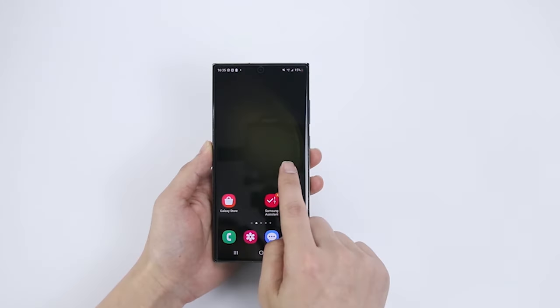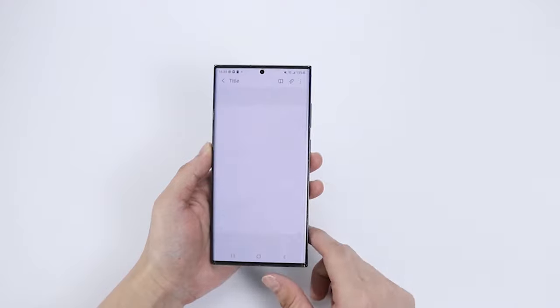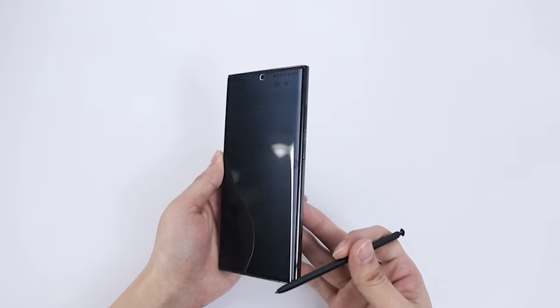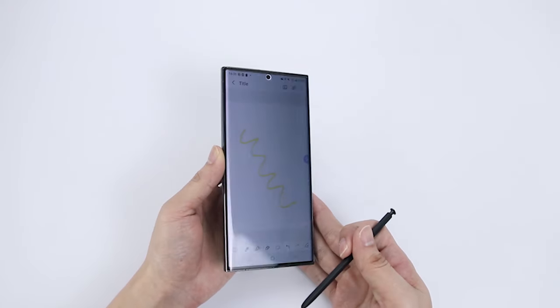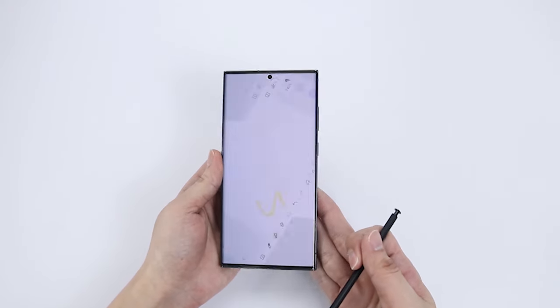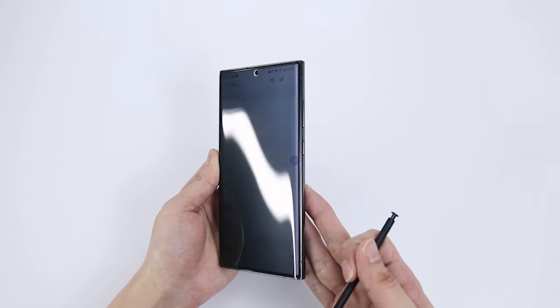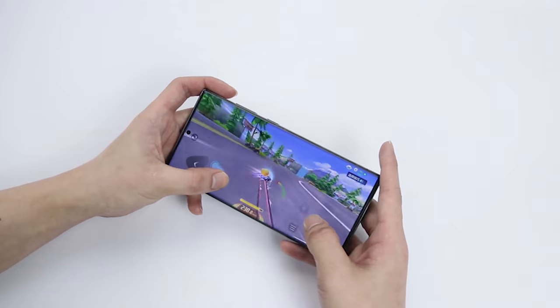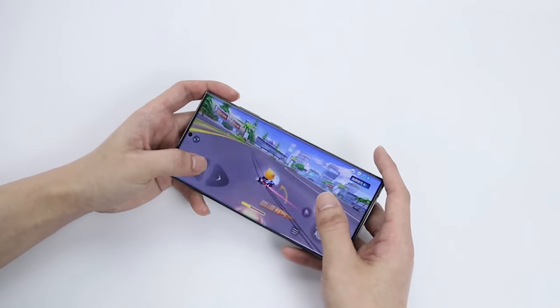For those seeking ultimate durability, the HD tempered glass screen protector is the perfect choice. With its 10x military shockproof upgrade and edge-fortifying design, this screen protector offers unmatched protection against unwanted scrapes and scratches. Say goodbye to the fear of keys or other hard objects damaging your phone screen—this tempered glass protector has got you covered.